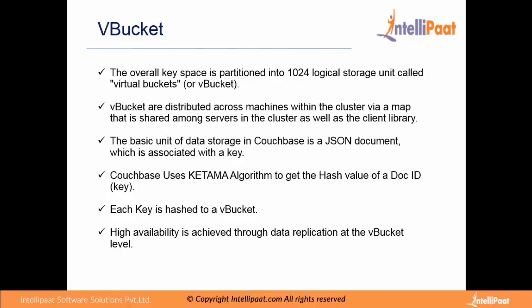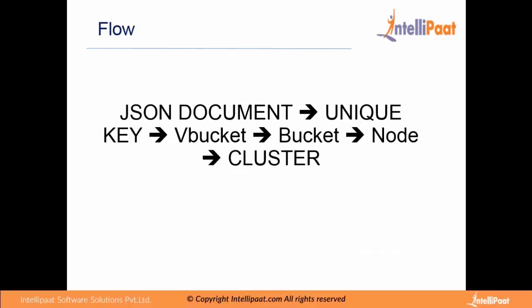High availability is achieved through data replication at the Vbucket level. For example, if we have a replication factor of 2, we will have a total of 2048 Vbuckets. To combine all these terms: data is stored in JSON documents, each document is assigned a unique key, that key falls into a Vbucket, the Vbucket is part of a particular bucket, a node contains a number of buckets, and multiple nodes combine to form the cluster.